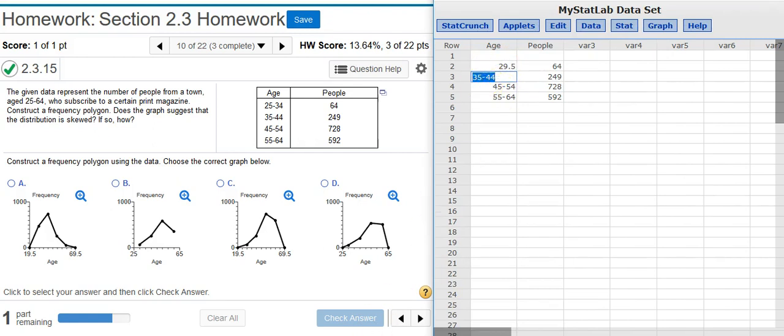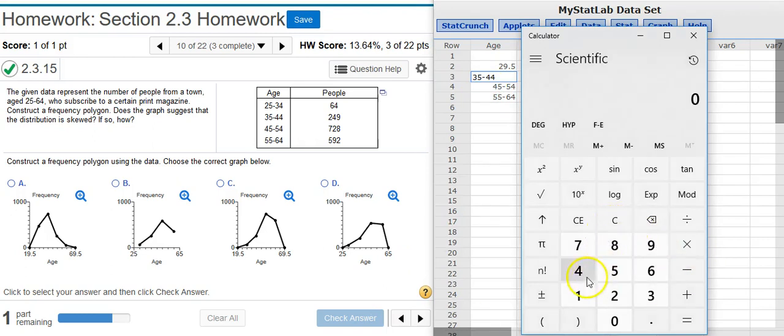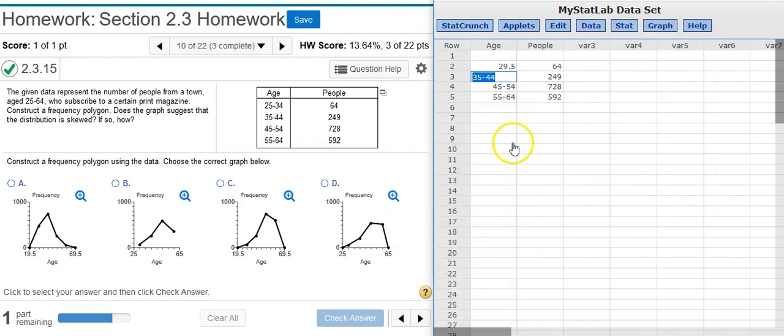And then I can do the same calculation here. Notice how it's apart by 10. Notice how the different categories here—the lower limits are separated by 10, the upper limits are separated by 10—only makes sense that the midpoints are going to be separated by 10, so I can just add 10 to the one that came before to get the next one in line.